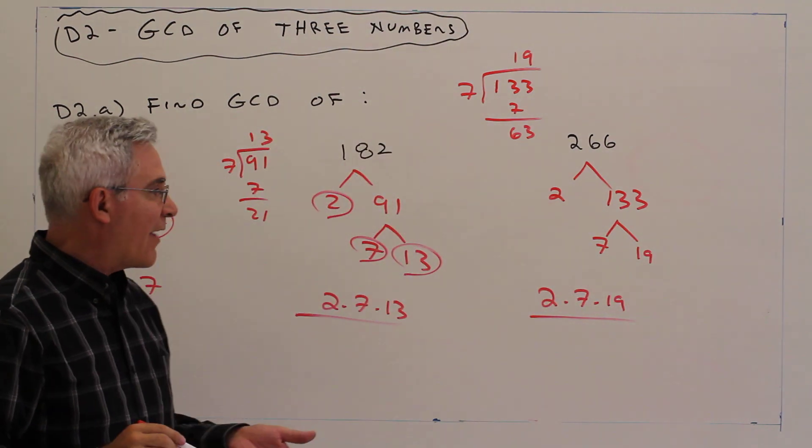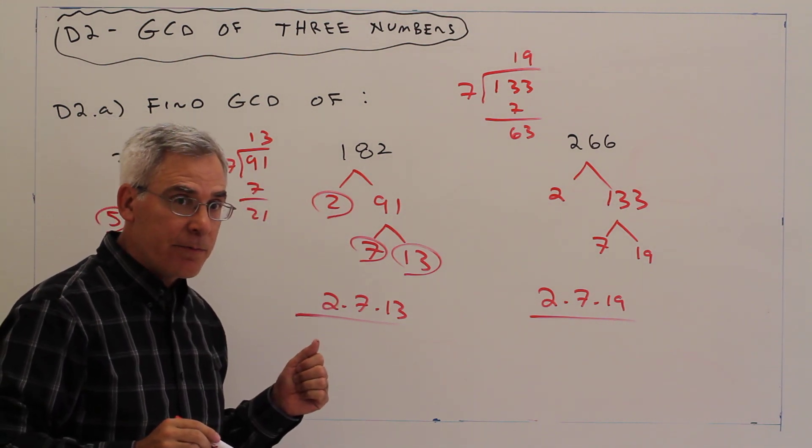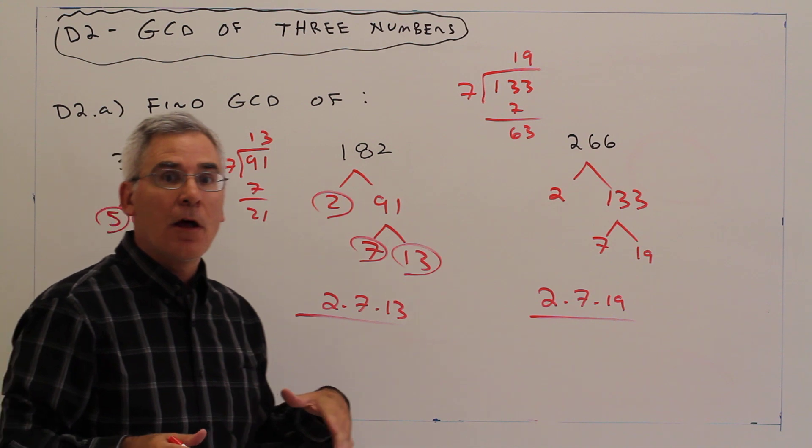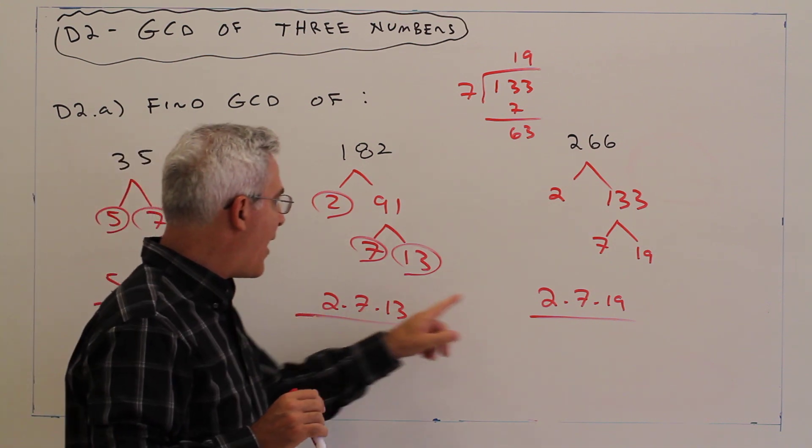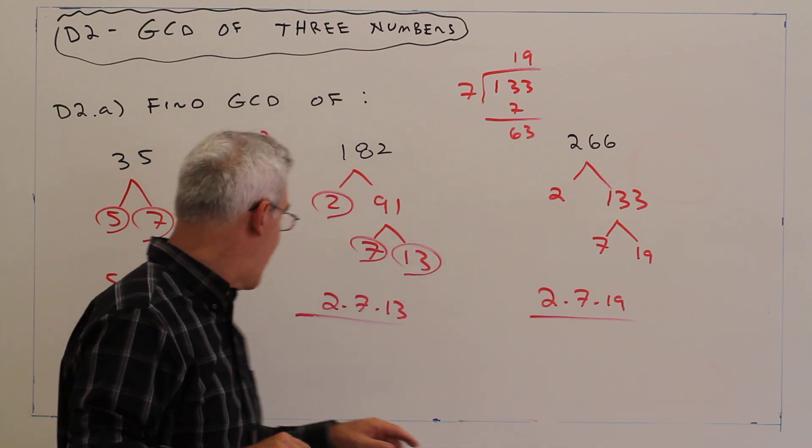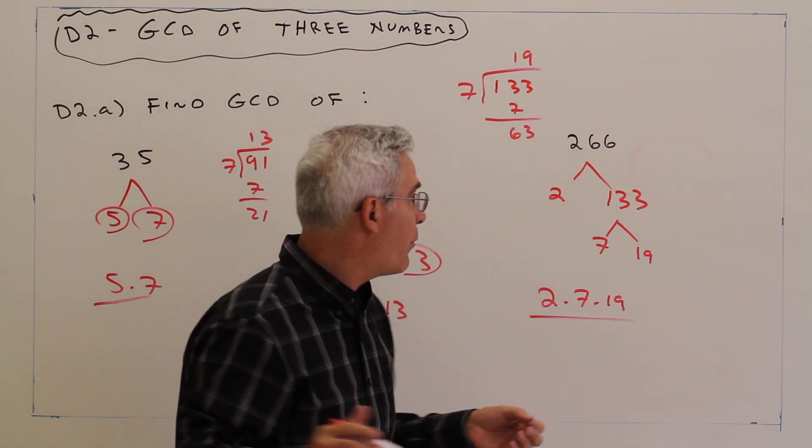Okay, so once I've got the prime factorization, to find the greatest common divisor—again, greatest means least. One 5, no 5s, no 5s, report no 5s. One 7, one 7, one 7, report a 7.